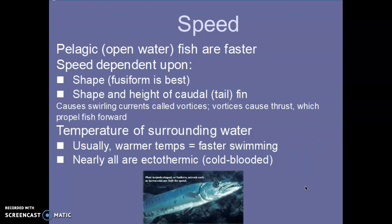Their speed in the water is actually determined by their fins and their shape. If it is an open water fish, they're usually the faster ones — the pelagic ones. It's called a fusiform shape, which is very similar to a torpedo. The shape of the tail and how they move it causes a vortex, which can actually thrust them forward. The temperature of the water also determines how fast they are. If there's warmer temperatures, they can move faster; if colder, they move slower. They're nearly all ectothermic, meaning they are cold-blooded, so the temperature of their surroundings affects their body temperature.